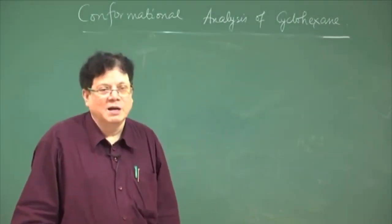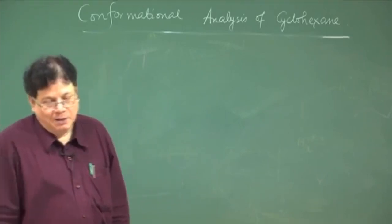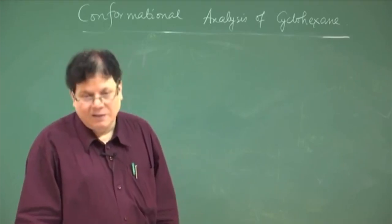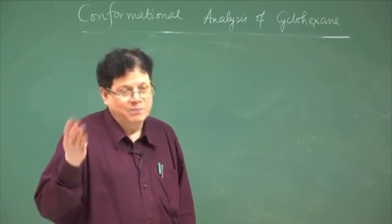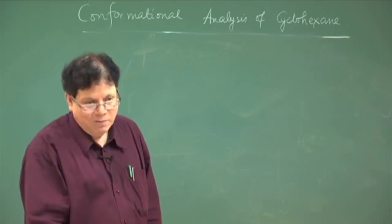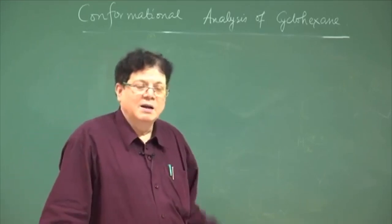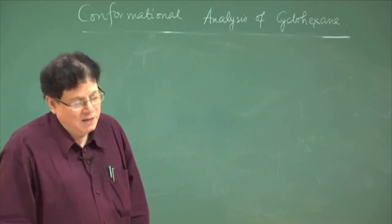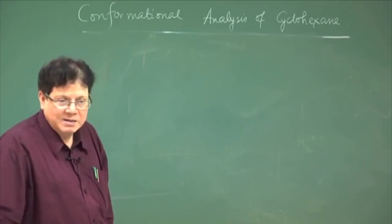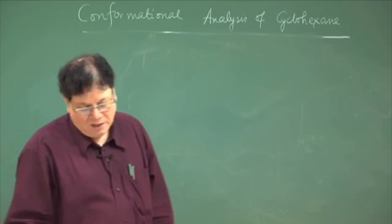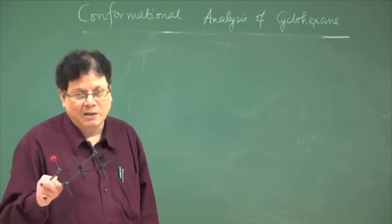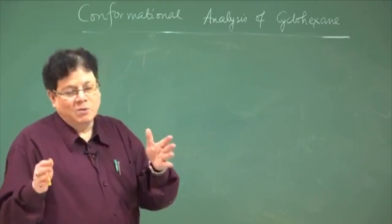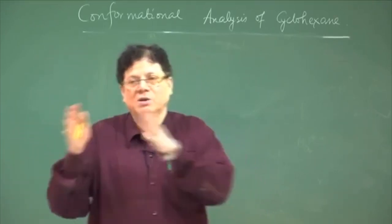Welcome back. We will continue with the conformation of cyclohexane. So far, what we know is that cyclohexane can exist in two extreme conformations: one is the chair form and another is the boat form. The chair form is the more stable of the two, and we are going to explain that in this lecture by discussing the energy differences between the chair and the boat form. The boat form is involved when we flip one chair into the other form.